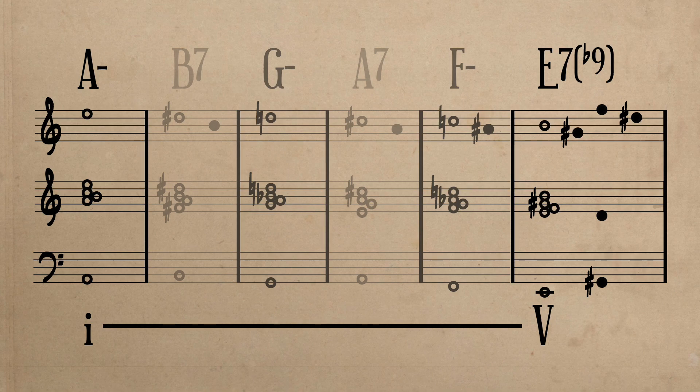This is similar to the chord progression of A minor, G major, F major, and E major, or 1, flat 7, flat 6, 5, which is a very common prolongation of the harmonic progression of 1 to 5.